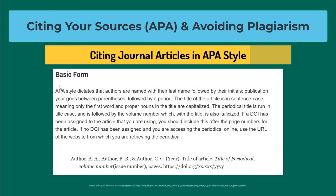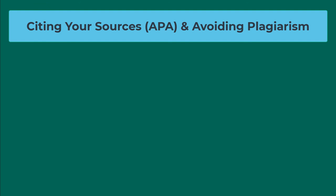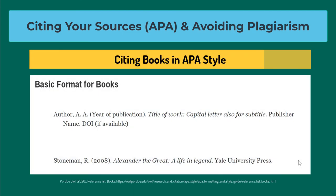A journal article citation will follow this format: Author's last name, first initial, period. The year of publication in parentheses followed by a period. The title of the article followed by a period. The title of the journal, which is italicized, followed by a comma, followed by the volume in which the article was published — also italicized — followed by the issue in parentheses, followed by a comma, followed by the page numbers on which the article appeared. A book citation will follow this format: Author's last name, first initial, period. The year in which the book was published in parentheses, followed by a period. The title of the book, followed by a period. And the publisher, followed by a period.